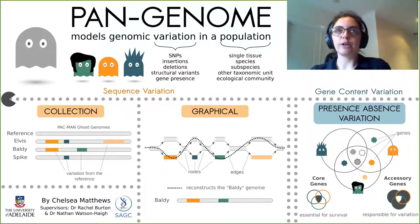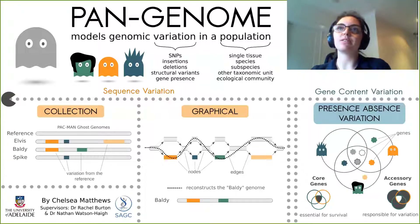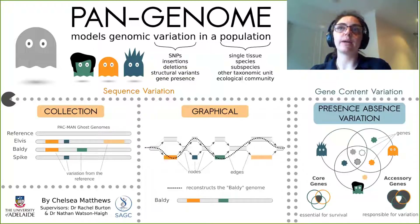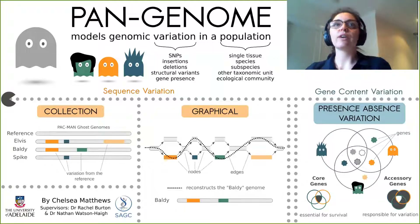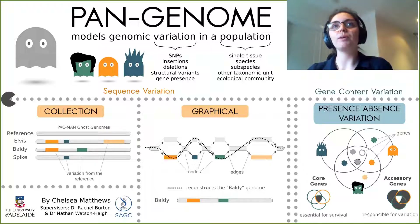A graphical pangenome is made up of a set of nodes and edges. Nodes are segments of genomic sequence and edges dictate how these segments of sequence are joined together. Here we have a graphical pangenome constructed from the collection pangenome on the left, and you can see that by following different paths through the graph we can reconstruct the sequences it was made from. For example, the baldy ghost genome is reconstructed by following the path indicated by the dashed line.